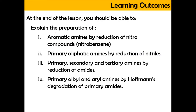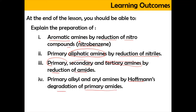In this video, we're going to explain the preparation of the aromatic amine by the reduction of nitro compound, which is nitrobenzene. Also, we're going to see the reduction of the nitro compound in order to produce the primary aliphatic amine. Next, we're going to reduce amide in order to produce the primary, secondary or tertiary amines. Last but not least, we're going to do the Hofmann degradation of the primary amide in order to produce either primary alkyl or aryl amines.